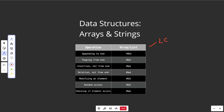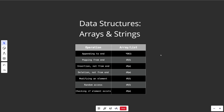This picture is from LeetCode — by 'list' they mean a dynamic array. To append to the end: most will be O(1), some will be O(N), so on average it's O(1) amortized. Popping from the end is constant. Inserting anywhere not at the end requires shifting, so that's O(N). Deleting anything not from the end also requires shifting — O(N). Modifying an element at a particular index is constant. Accessing an element at an index is constant. Checking if an element exists is O(N).